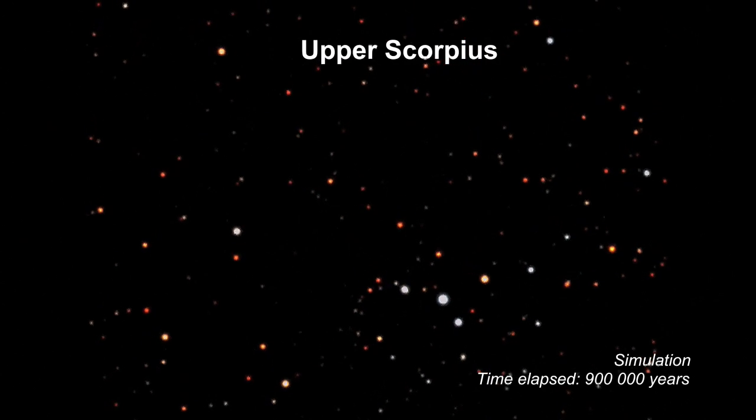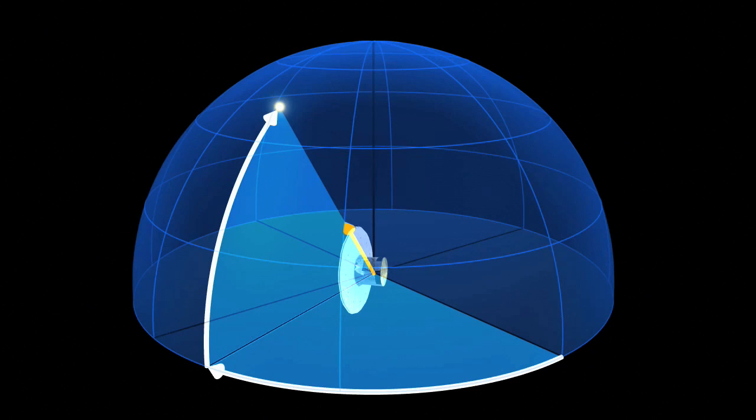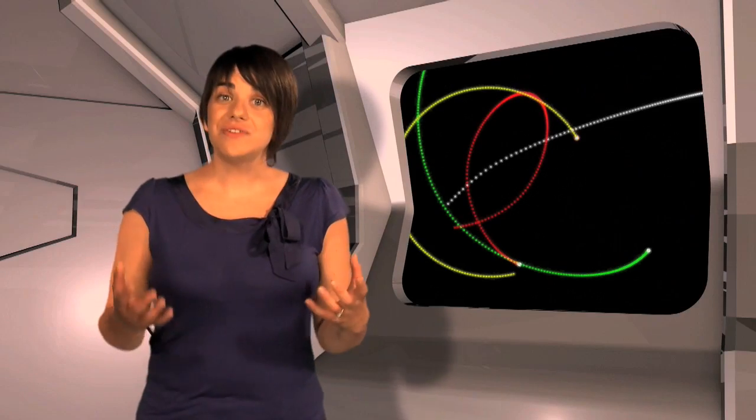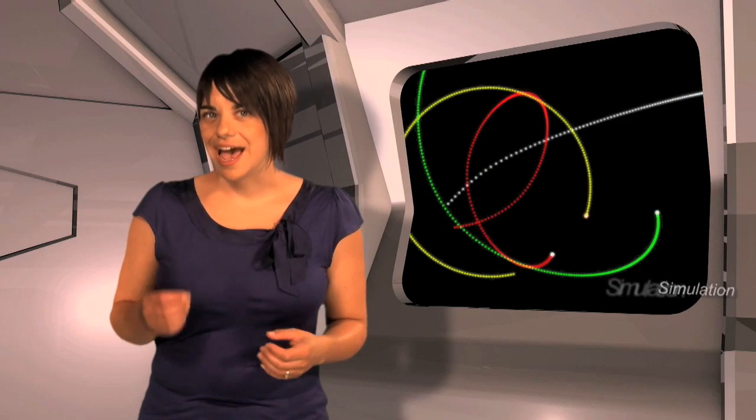Stars also move towards or away from an observer along their line of sight. This motion is known as a star's radial velocity and plays an important part in building a true picture of a star's movement in our galaxy. With everything constantly in motion, how do astronomers measure the distance to the stars?